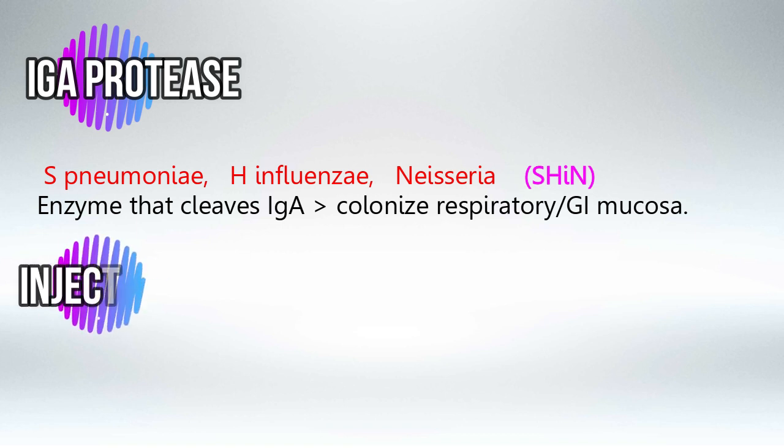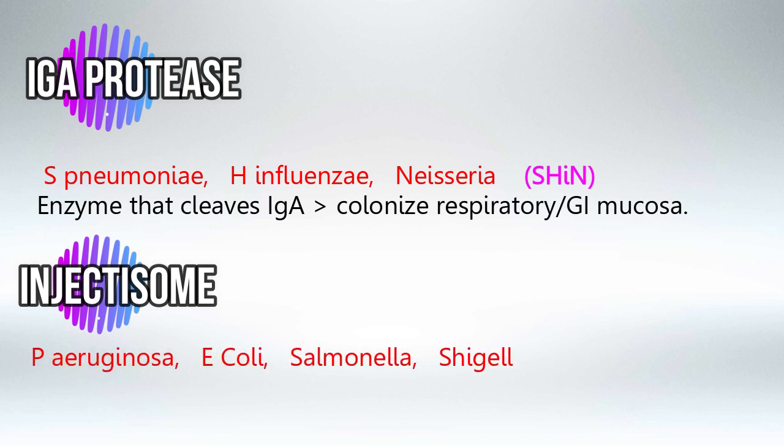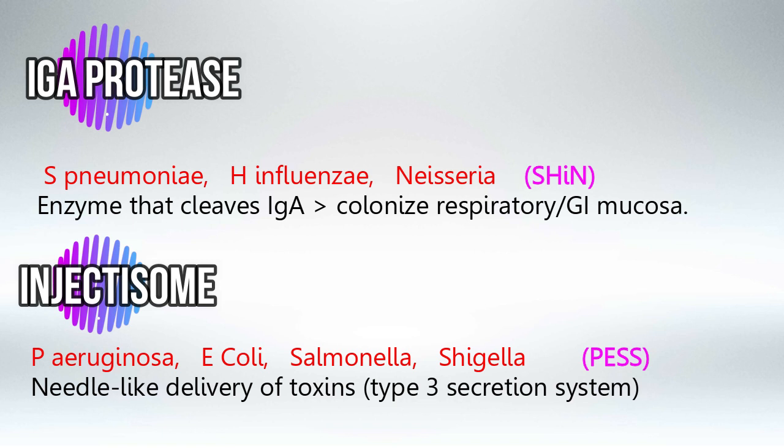Next we have the Injectisome, used by Pseudomonas aeruginosa, E. coli, Salmonella, and Shigella. To remember these bacteria, just remember the word 'piss.' The Injectisome is a small needle-like structure that the bacteria use to deliver toxin directly into the host cell, and it is known as the Type 3 secretion system.